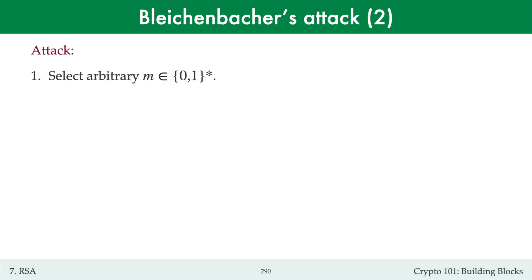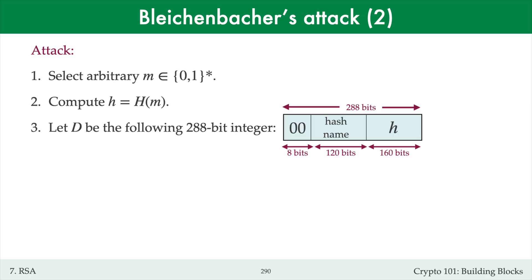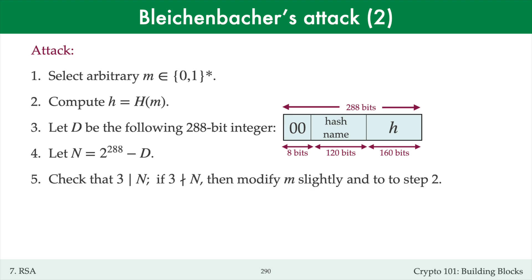Here, then, is Bleichenbacher's attack. The adversary selects the message little m and computes its hash. She then forms the bit string capital D of bit length 288 bits. D is comprised of the hash value — 20 bytes or 160 bits — then the hash name, which is 15 bytes, followed by the byte 00. She lets capital N be the integer 2^288 minus D. Note that D is positive, because D has bit length 288, and so D is less than 2^288 minus 1. The adversary then checks that 3 divides N. If not, then she modifies m slightly, perhaps in 1 or 2 bits, and goes back to step 2.